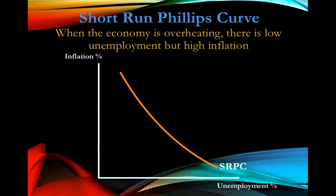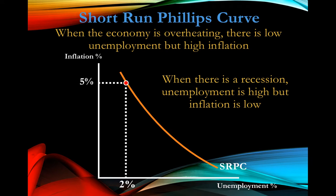This tells us there's an inverse relationship between inflation and unemployment. When the economy is overheating with high inflation, unemployment is low, and vice versa. For example, inflation at five percent corresponds to unemployment down at two percent, and when we're in a recession — meaning high unemployment — we have very low inflation. That is the gist of the short-run Phillips Curve.